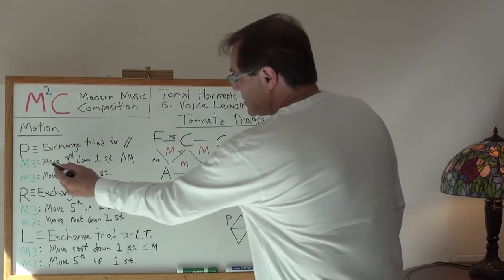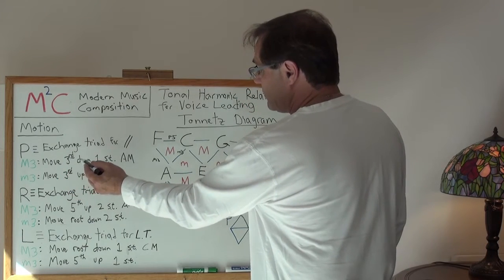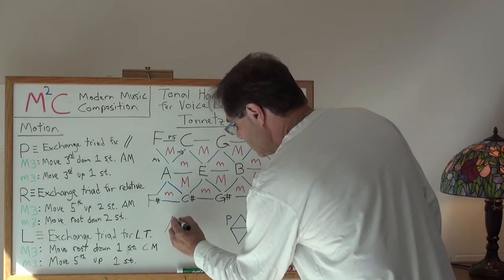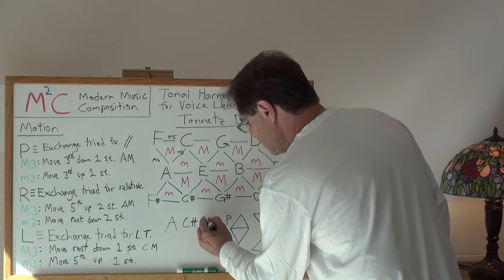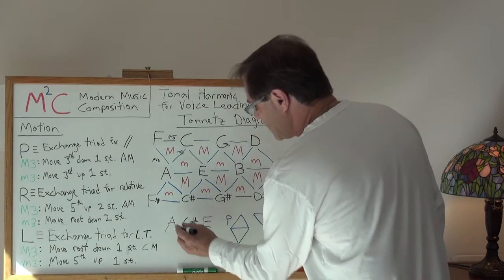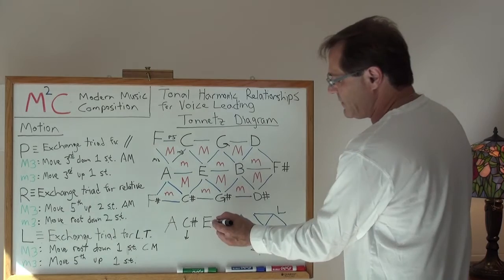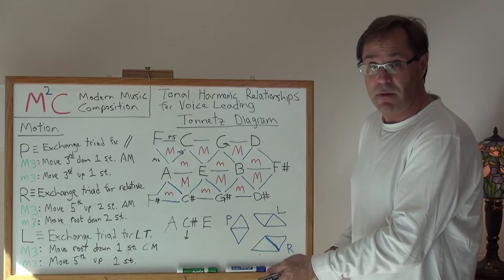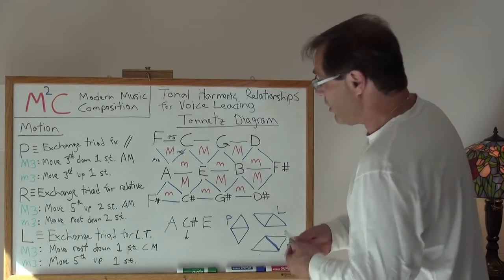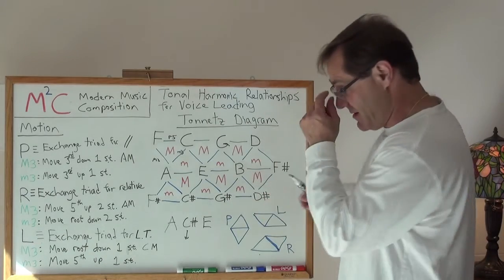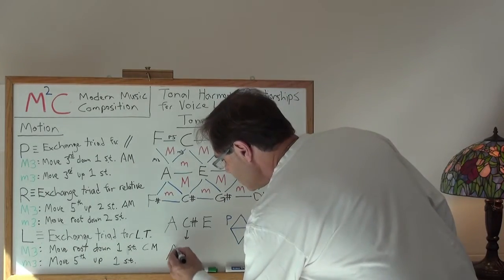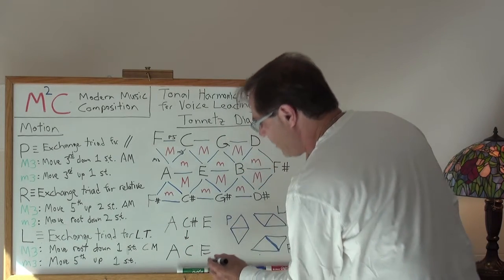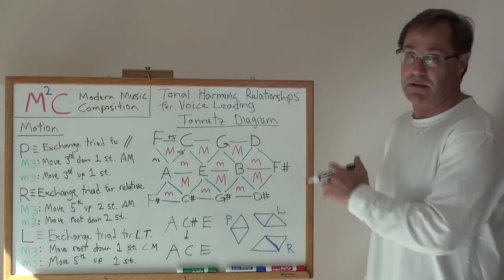So, if I'm in major, for example, what I want to do is I want to move the third of that major down one semitone. We're going to give an example of A major. So, what do I do? This is the root, the third, and the fifth. If I want to find A major's relative minor, how do I do that? Well, we know by the circle of fifths what it is, but we're going to just diagram it here. I take this, and I move the third down one semitone to C, and lo and behold, I get A minor, A major's parallel.